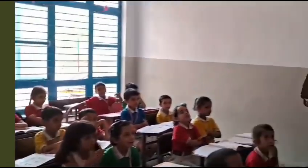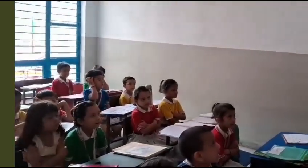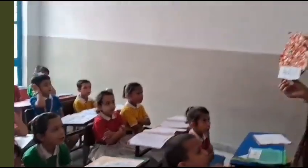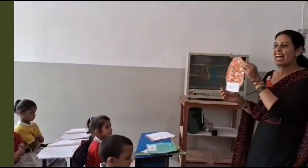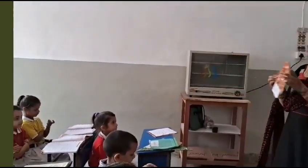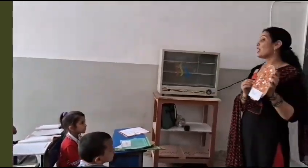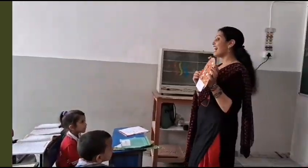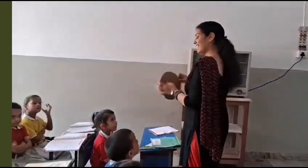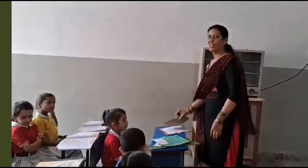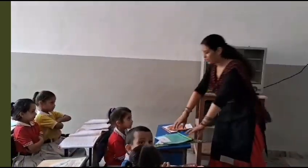Oval. Which shape is it? Oval. Very good. Oval. How many corners and sides in the oval? Zero. Zero. Very good.